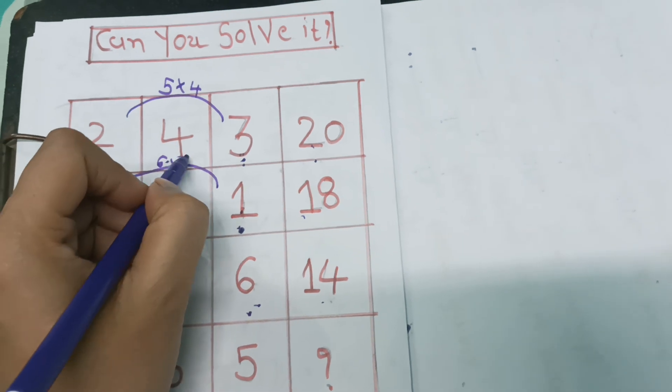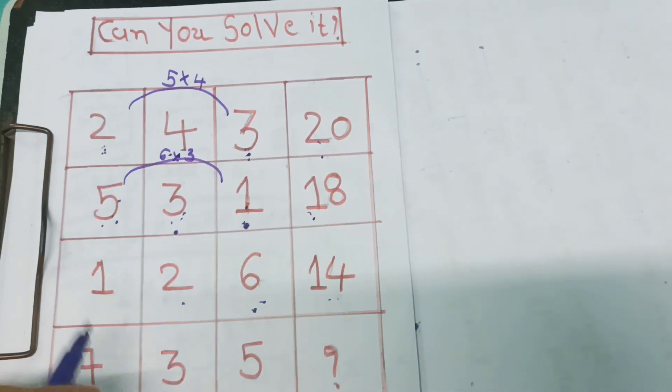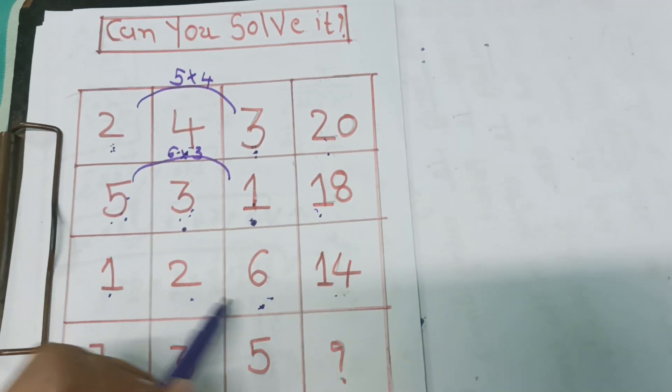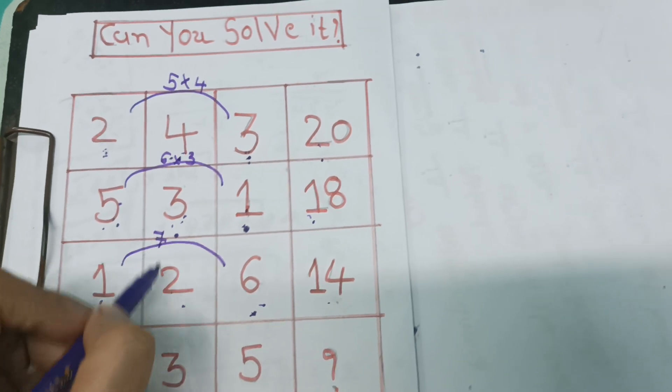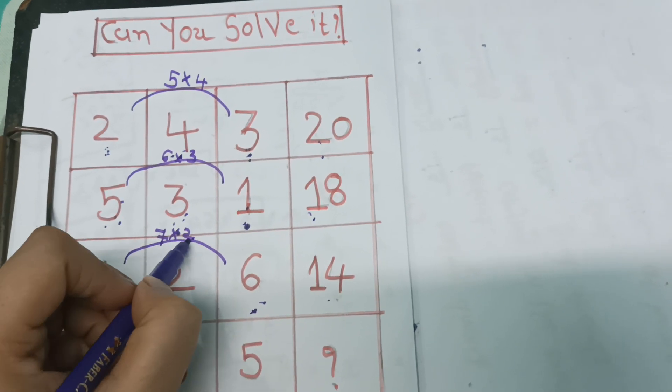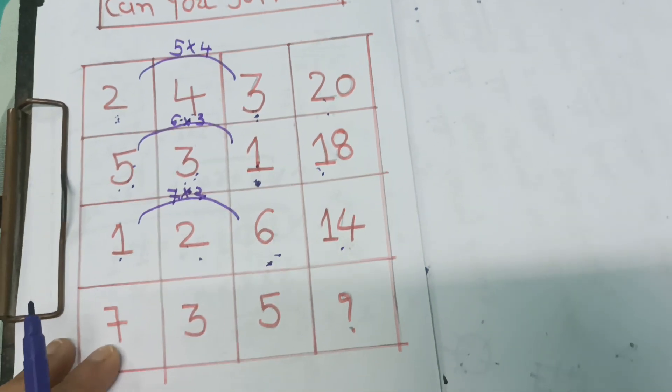Here 1 plus 6, that is 7, and 7 into 2, 7 twos are 14.